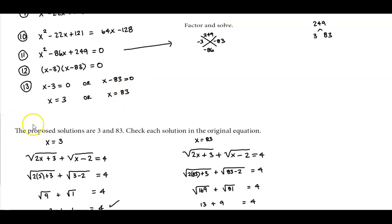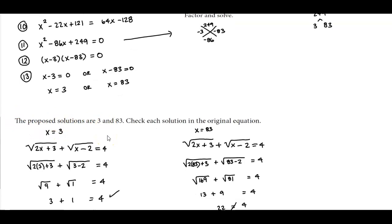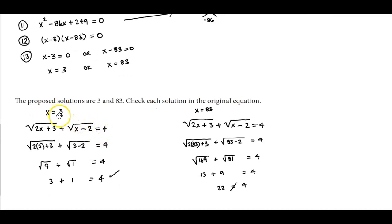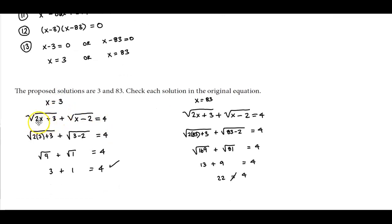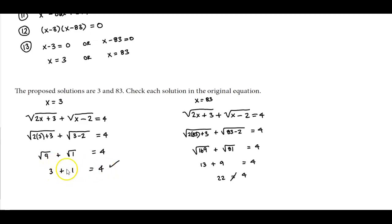The proposed solutions are x equals 3 and x equals 83. We check each in the original equation. When x equals 3, we get the square root of (2 times 3 plus 3) plus the square root of (3 minus 2) equals the square root of 9 plus the square root of 1, which is 3 plus 1 equals 4. So x equals 3 works as a solution.